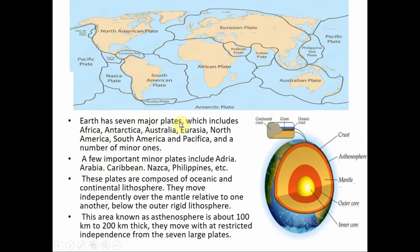The earth's lithosphere has seven major plates: Africa, Antarctica, Australia, Eurasia, North America, South America, and the Pacific, as well as a number of minor ones like Adria, Arabia, Caribbean, Nazca, Philippines, etc. These plates are composed of oceanic and continental lithosphere and move independently over the mantle relative to one another. Below the outer rigid lithosphere is an area known as the asthenosphere, which is about 100 to 200 kilometers thick, and the minor plates move with restricted independence from the seven larger plates.